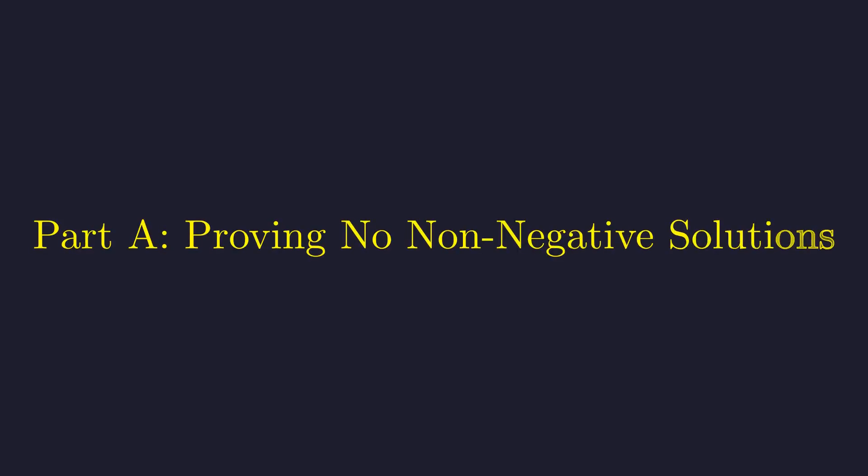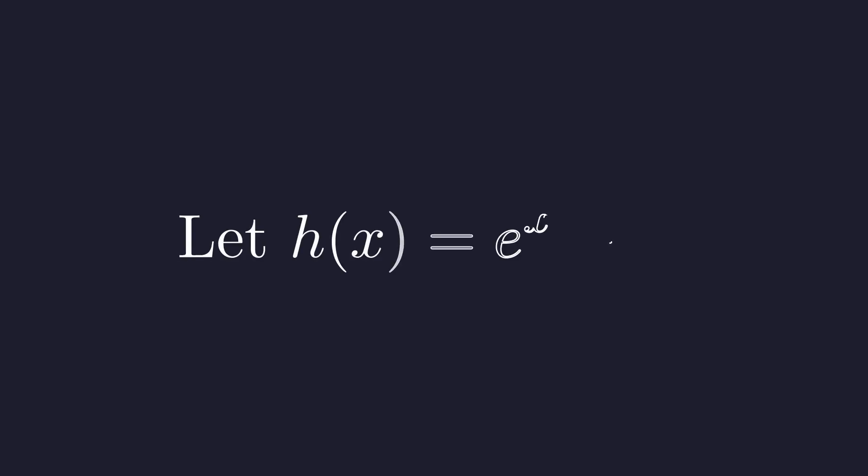Part A. Let's show there are no solutions when x is greater than or equal to zero. For this, we'll need some calculus. Let's define a helper function, h of x, as e to the x minus x squared. Why this particular function? Because the zeros of this function are precisely the solutions we're hunting for. When h of x equals 0, that means e to the x equals x squared.